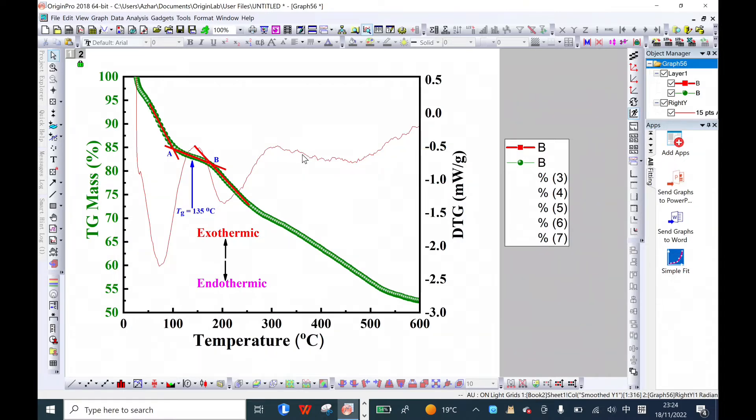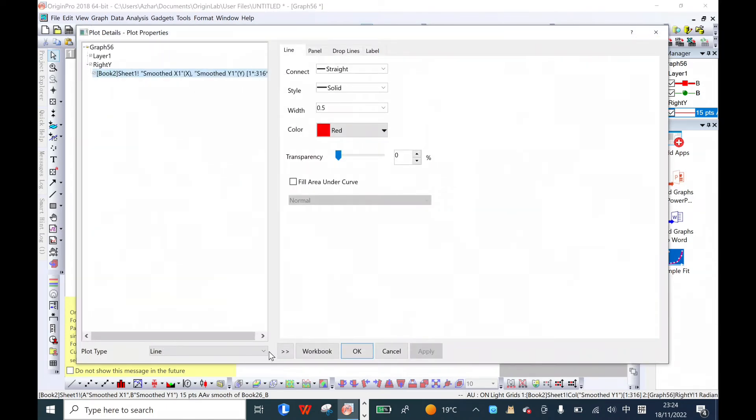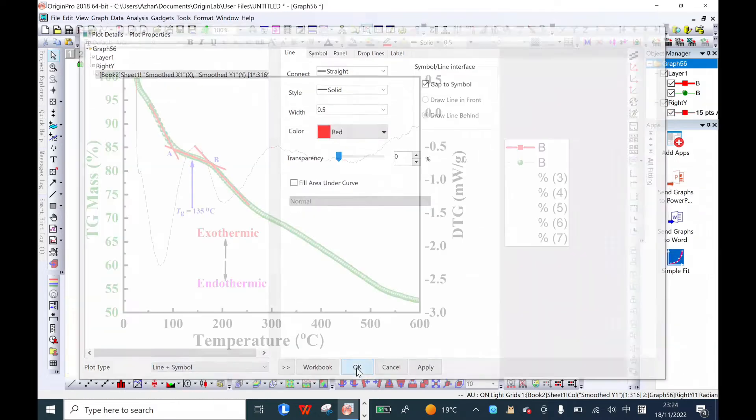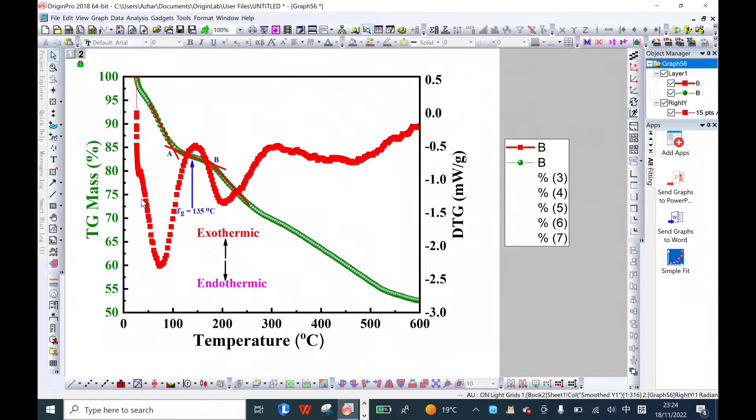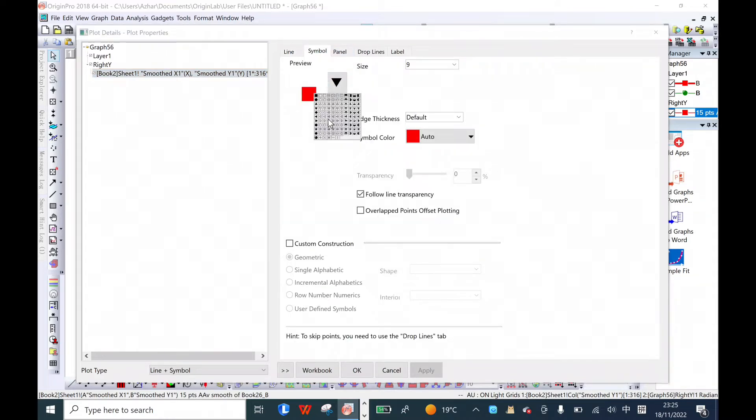There are minor fluctuations, but it's not important. I can remove them or choose another option. I'll go to Line and change it to Line Plus Symbol. You can see how much this curve is improved. I can make it more beautiful.